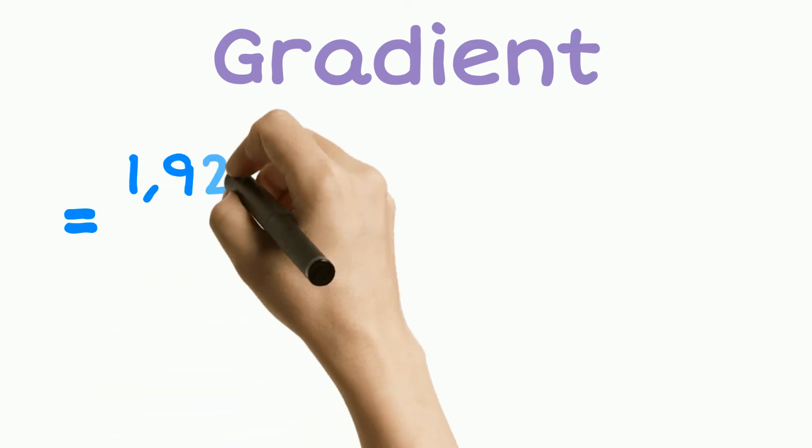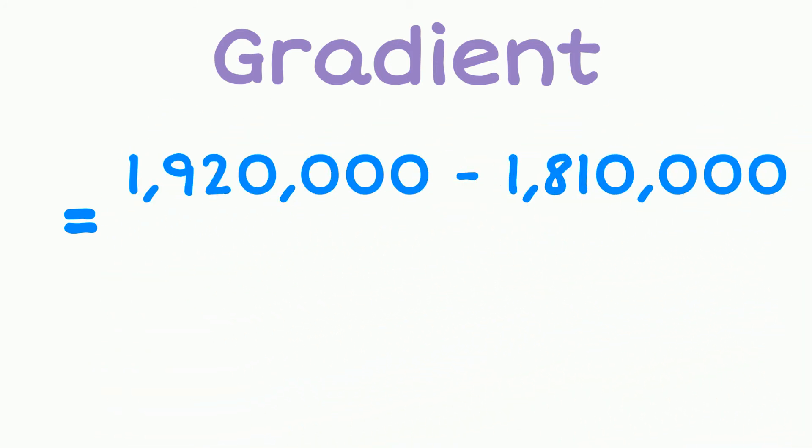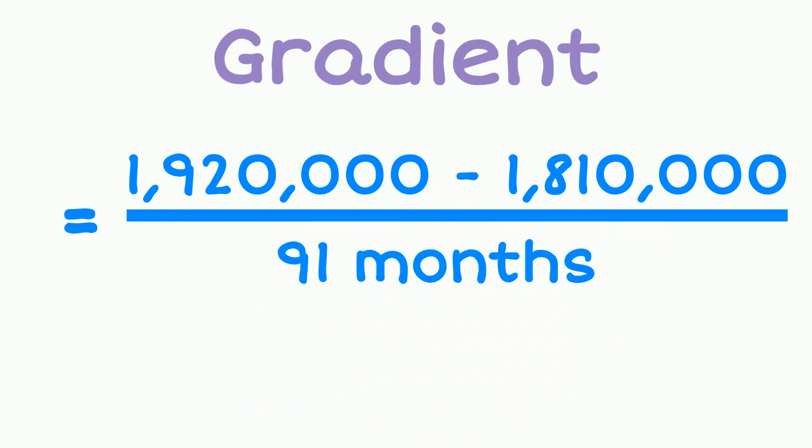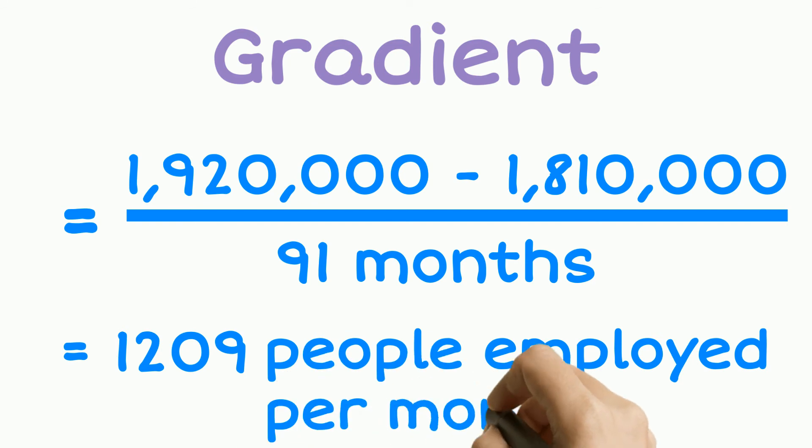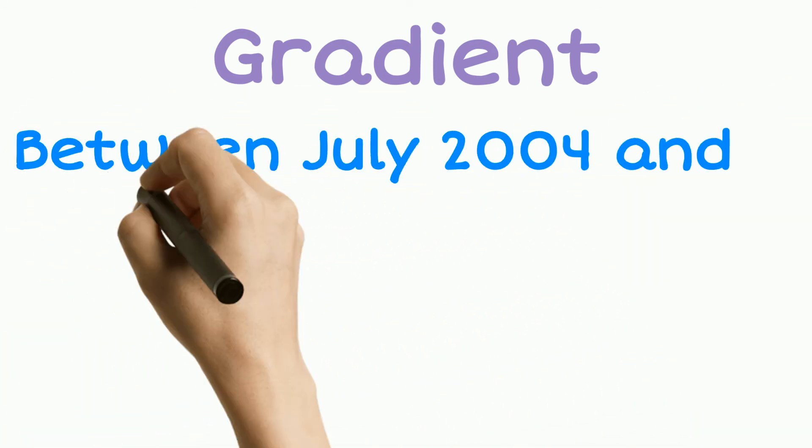So if I calculate the gradient, I've got the number of people employed, and that increased from 1.81 million to 1.92 million, so subtract those numbers. Then I'm going to divide that by our time period, which is 91 months. And this gives an average increase in the number of people employed of 1,209 people per month on average over this time period. So that's how much the numbers increased each month on average.